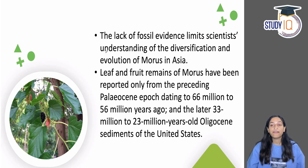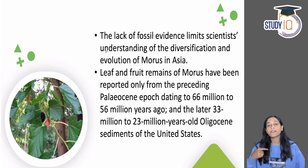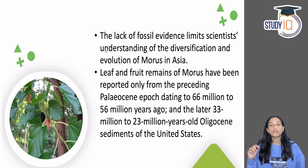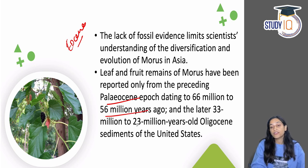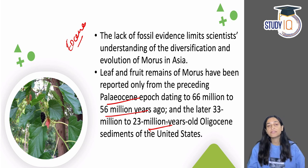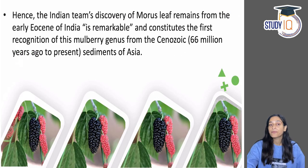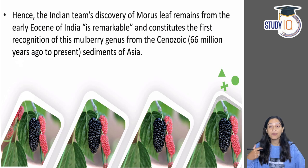Until now, since there was no fossil evidence, scientists didn't have much information about how Morus diversified or how evolution worked on it in Asia. Now with the leaf and fruit fossil from the Eocene age, we know this much. Earlier, based on Paleocene time (66 to 56 million years ago) or estimates of 33 to 20 million years ago, we only had guesses based on sediments from the United States. But we had no knowledge of Asia. This discovery from India is remarkable because it is the first time a fossil of this genus has been found.